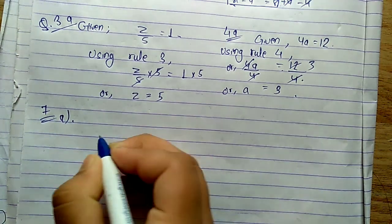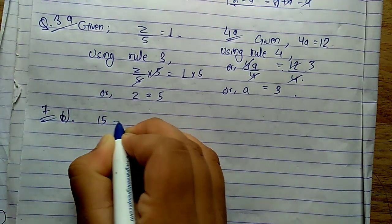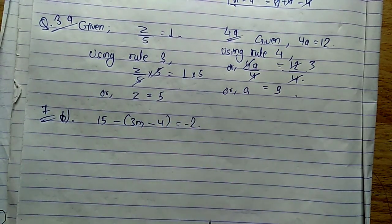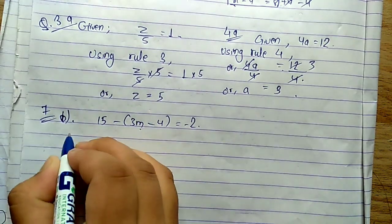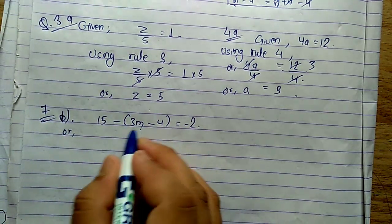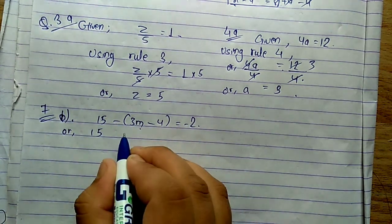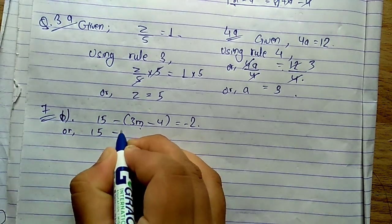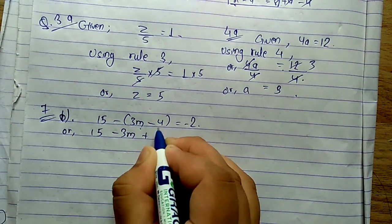Let's do question number 7b. We have: 15 minus (3M minus 4) equals minus 2. First let's open the bracket. Since there is a minus sign outside, minus times plus 3M becomes minus 3M, and minus times minus 4 becomes plus 4. So we get 15 minus 3M plus 4 equals minus 2.